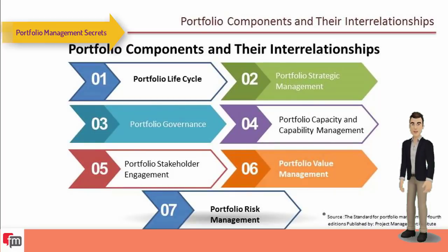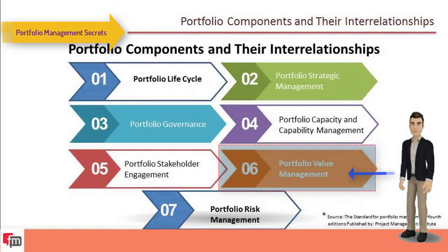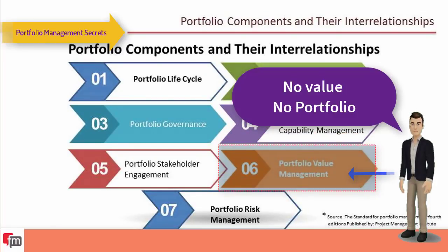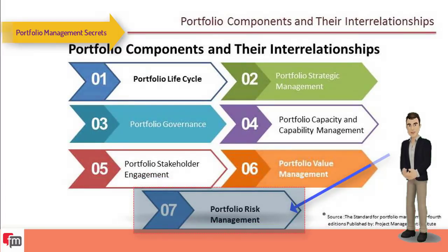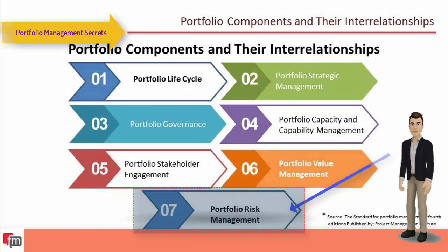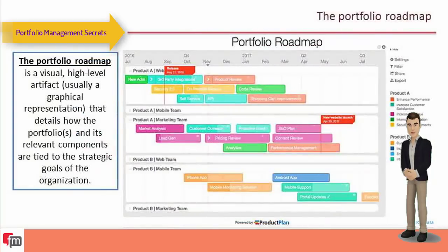The five performance domains for a portfolio include portfolio value management, which enables investment in the portfolio. The sixth domain is portfolio risk management, which evaluates risk — both positive opportunities and negative threats — at the portfolio level, and considers how risk may impact the achievement of portfolio strategic plans and objectives. Another important topic is the portfolio roadmap.